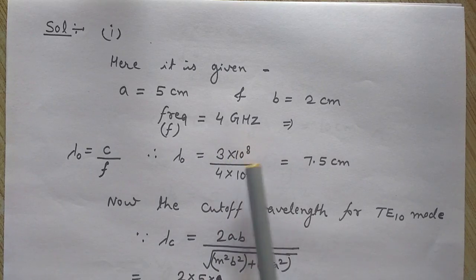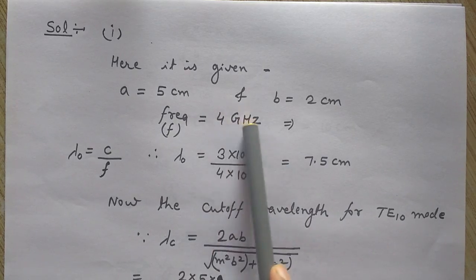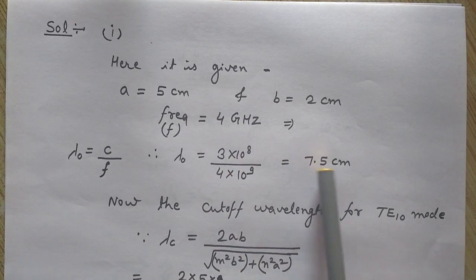So lambda naught is 3 into 10 to the power 8 divided by 4 into 10 to the power 9. This is gigahertz, 4 gigahertz. So it comes out to be 7.5 cm.